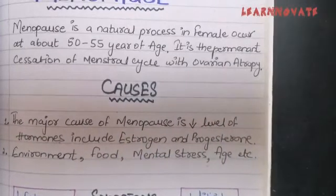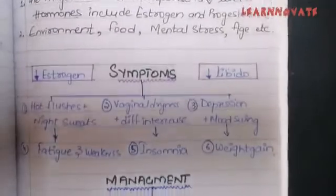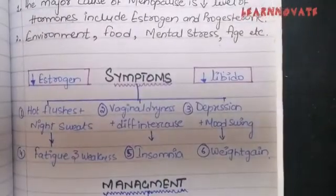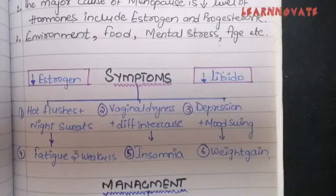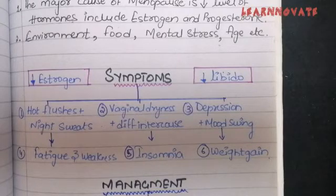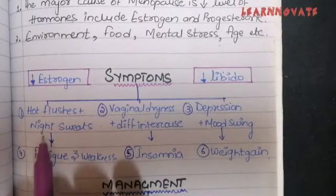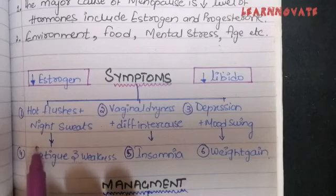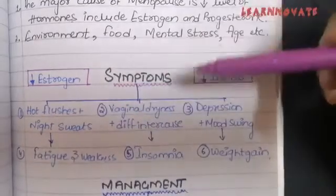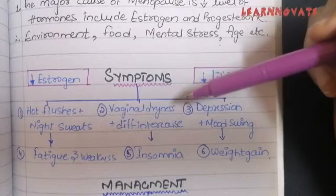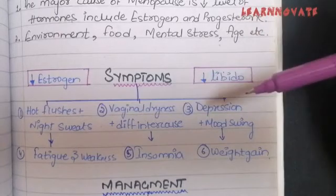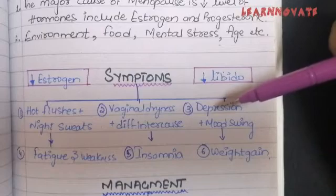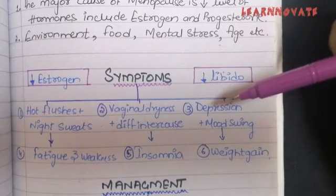Now coming to the symptoms of menopause. The major and common symptoms that occur in menopausal women include: number one, hot flushes with night sweats, which occur more frequently; number two, vaginal dryness and difficulty in sexual intercourse; and number three, depression and mood swings accompanied by fatigue and frustration.